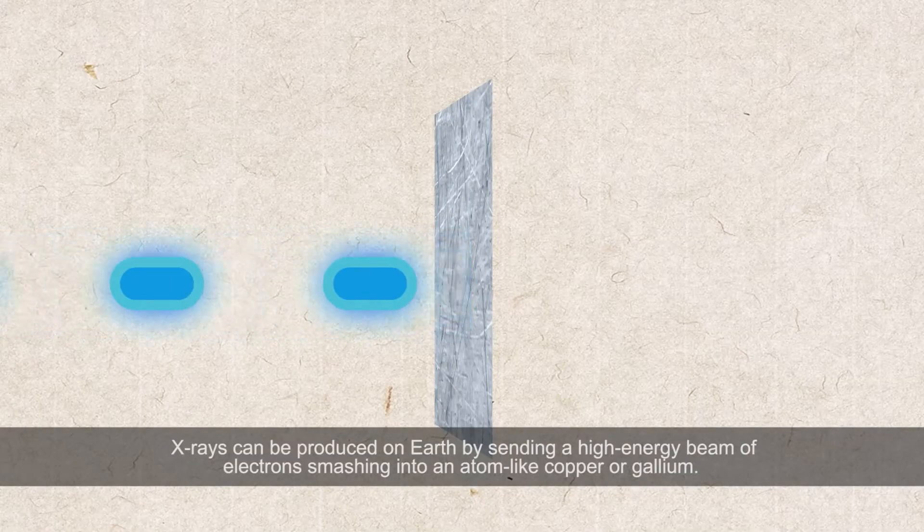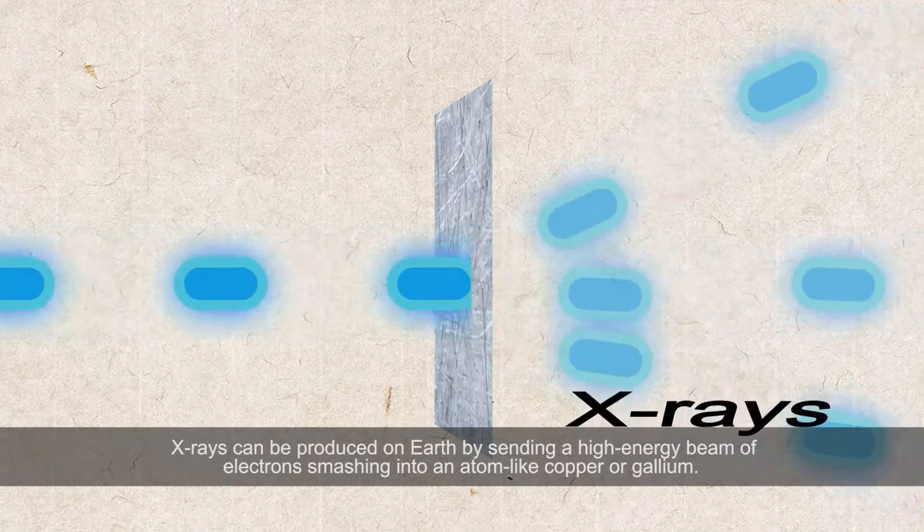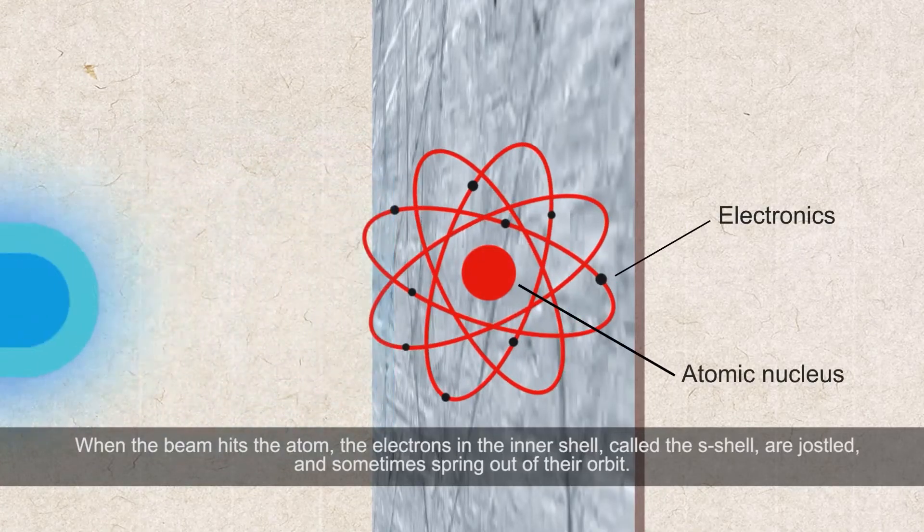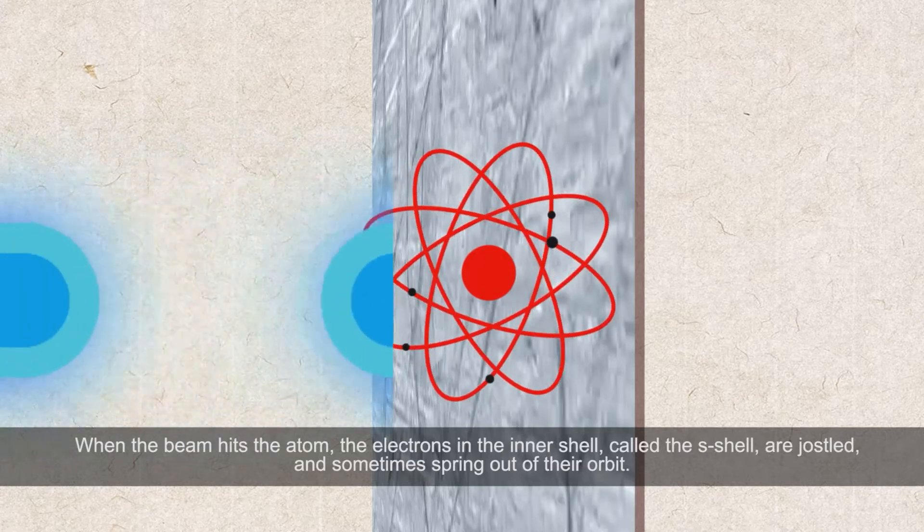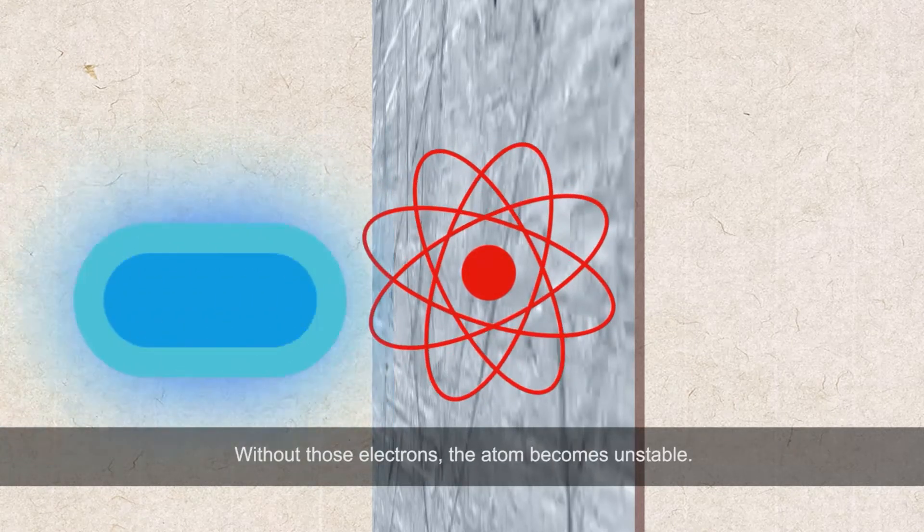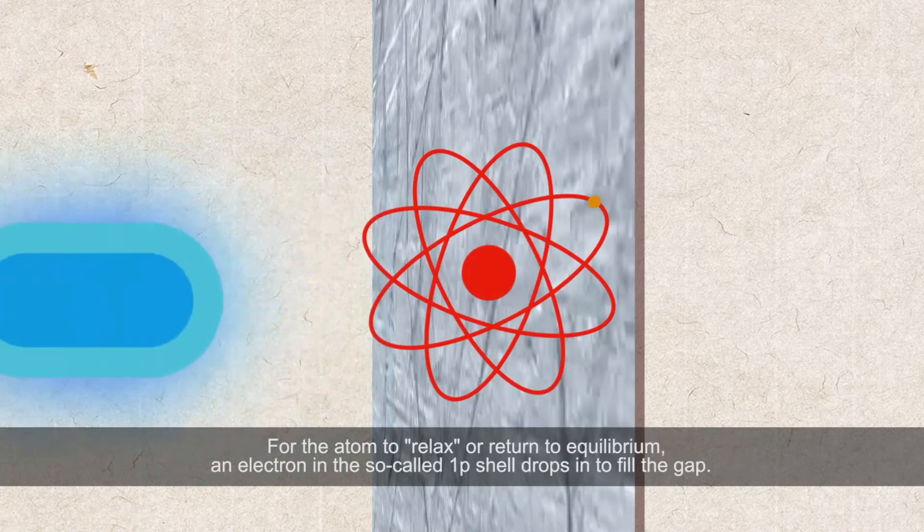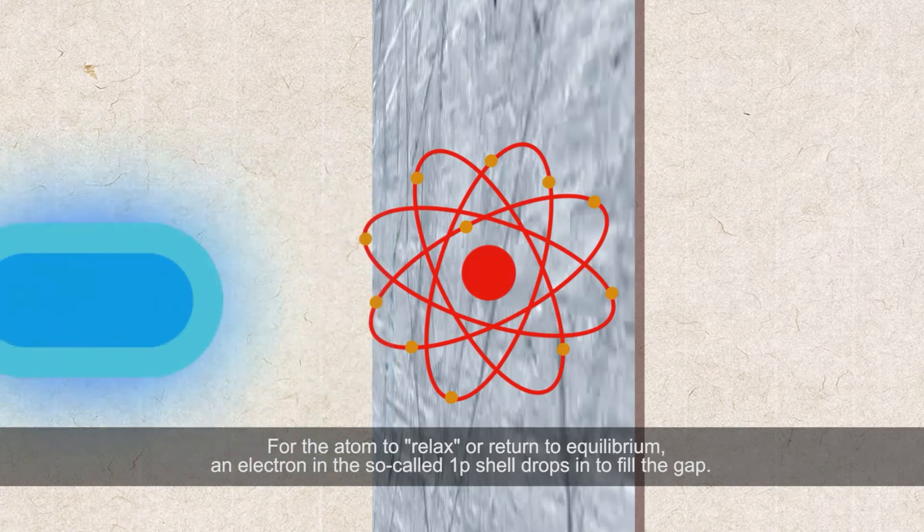X-rays can be produced on Earth by sending a high-energy beam of electrons smashing into an atom like copper or gallium. When the beam hits the atom, the electrons in the inner shell, called the S shell, are jostled and sometimes spring out of their orbit. Without those electrons, the atom becomes unstable.